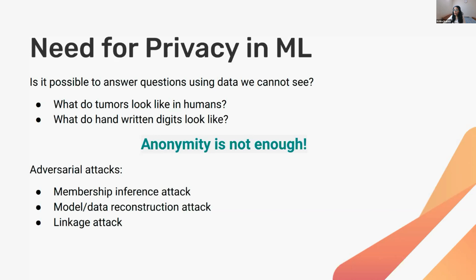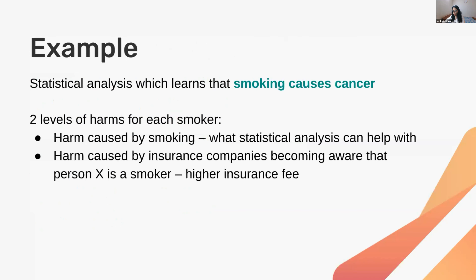Another attack involves reconstructing the original information from a model or dataset. There are also linkage attacks, where data from two different ecosystems is combined to reveal a lot about someone present in both. This actually happened with the famous case of linking the anonymous Netflix and IMDB datasets, allowing researchers to identify exactly who the people in the Netflix dataset were. This shows that simply anonymizing a dataset is not enough to ensure privacy.